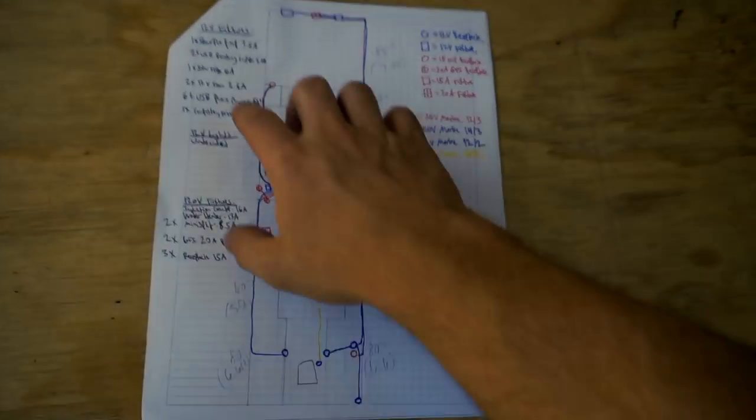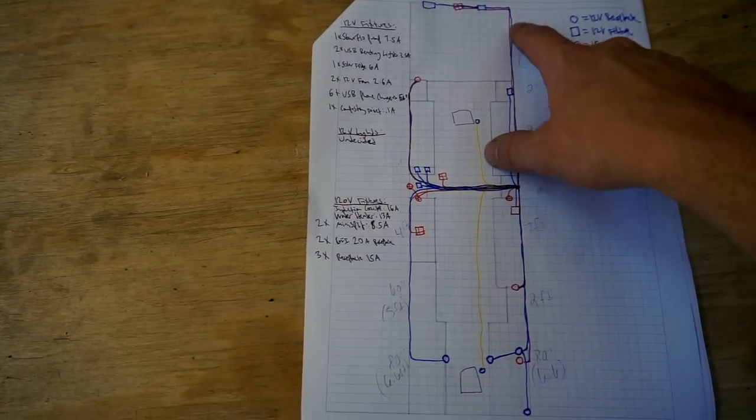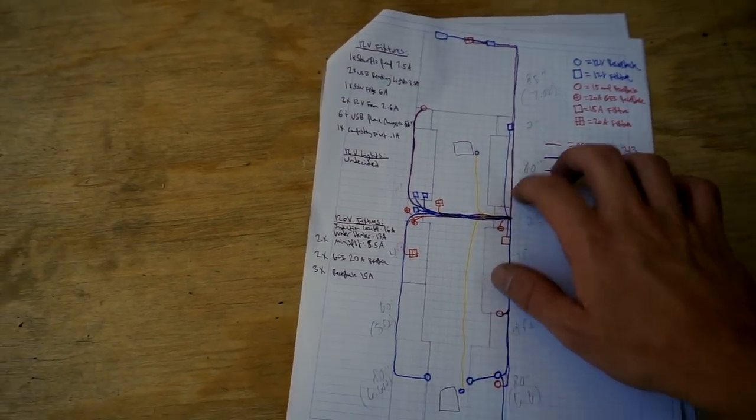We've also got an electrical plan. We've got the amperage of all of our fixtures, general distances, which will help you determine what gauge wire you need. Everything's planned out.